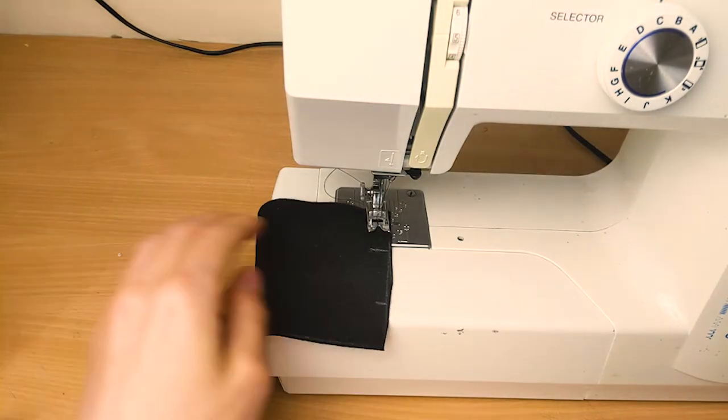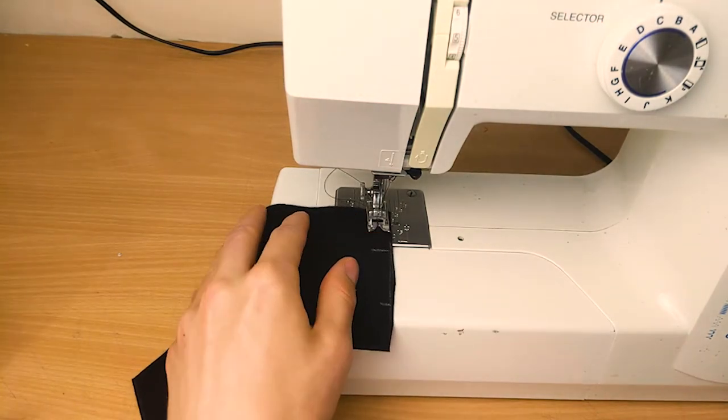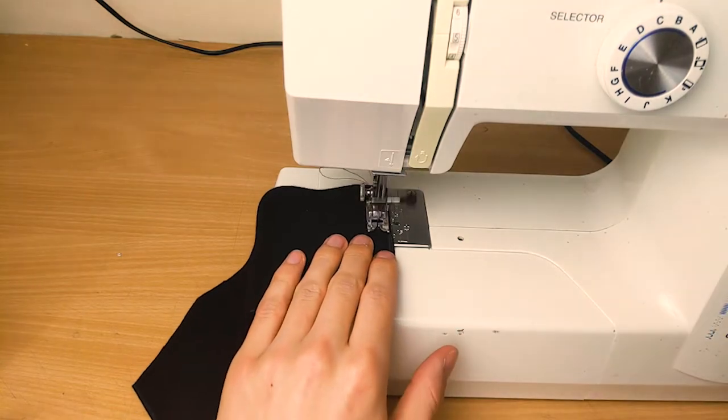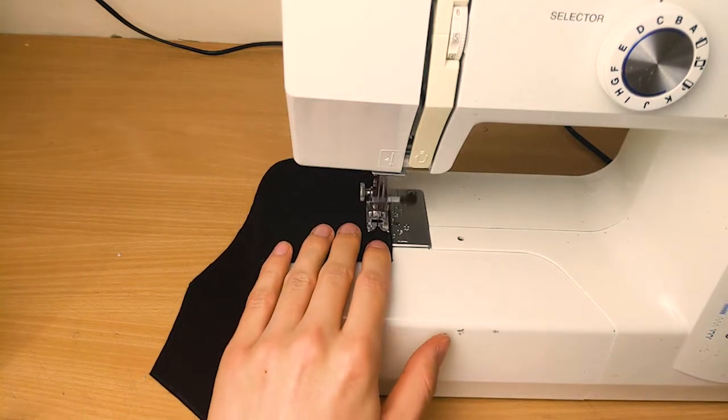Machine the two pieces together with a one centimeter seam allowance, backtacking on both ends and backtacking the fall as well if you wanted. Fold it open and press the seam open.